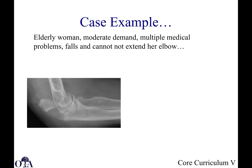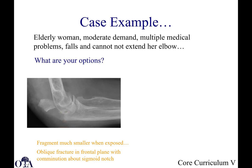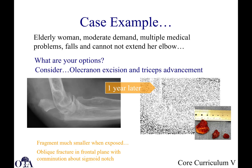Here's a case example: an elderly woman, moderate demand, multiple medical problems, falls, and can't extend the elbow. She has a comminuted fracture with a large displaced fragment and additional smaller fragments. Something does need to be done surgically. When you get in there, that fragment is actually smaller than it looked on x-ray. There's an oblique fracture in the frontal plane and some comminution at the sigmoid notch. One option to consider is olecranon excision and triceps advancement — it's an elderly patient and the fracture may be hard to reconstruct.